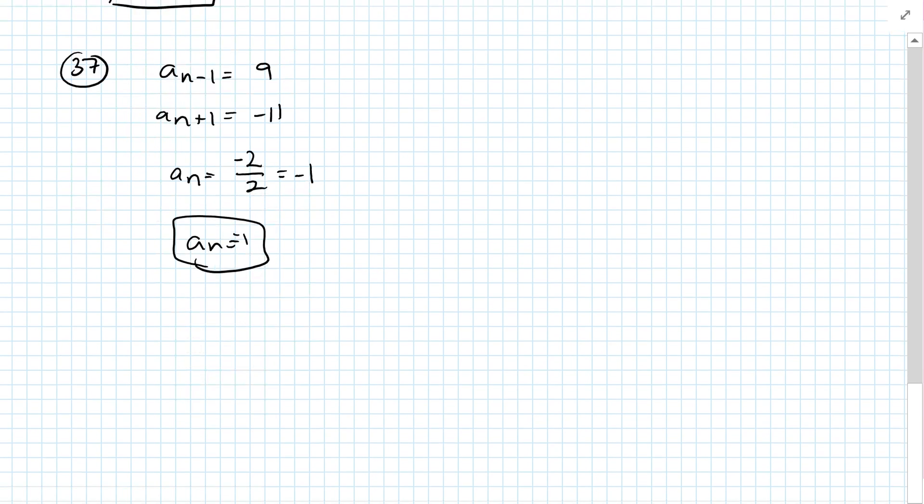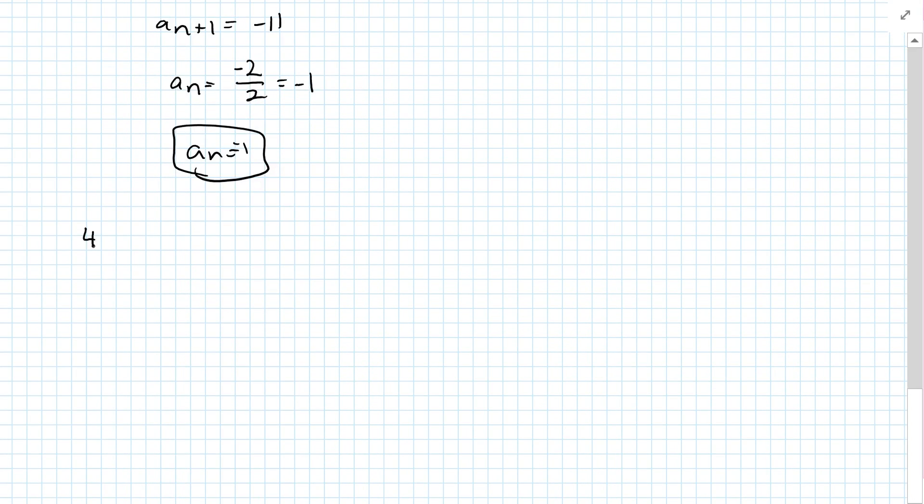Every other odd. So now skip 39 and we're doing 41. 41 says A of N minus 1 is negative 2X. A of N plus 1 is 2X. So the A of N has to be 0.